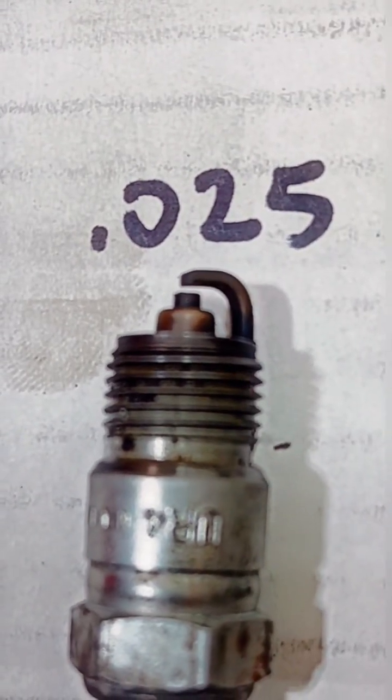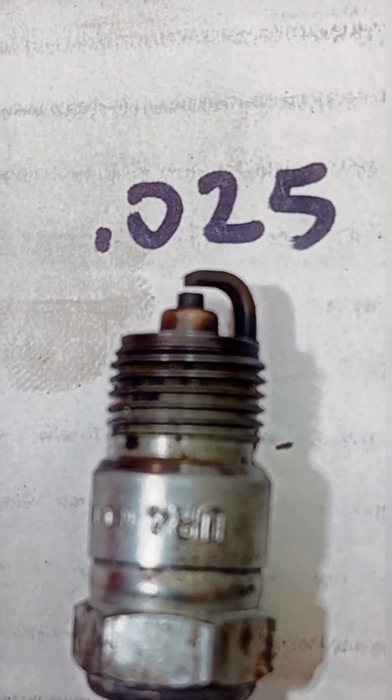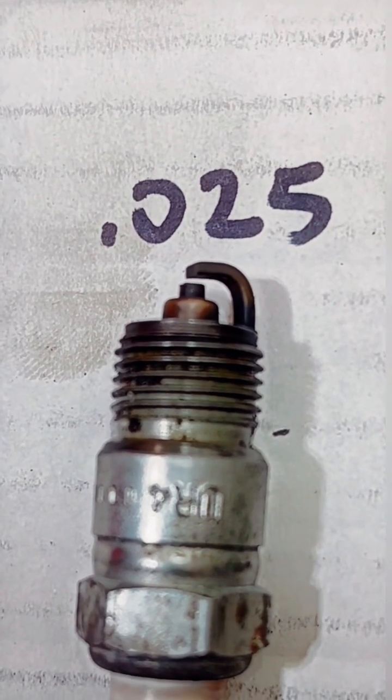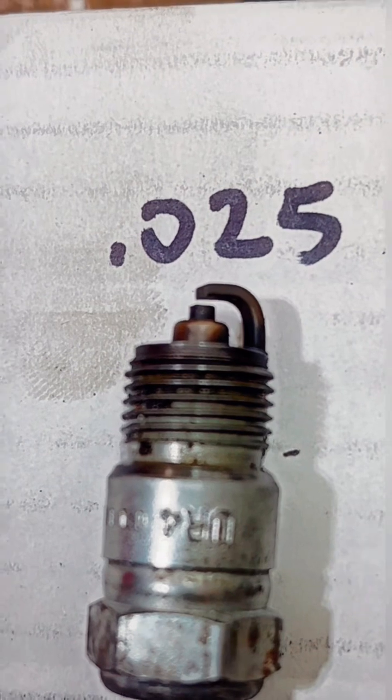First we have 25 thousandths, which is probably going to be small engines, older things, points style ignitions. Things like that are going to run maybe 25 thousandths.